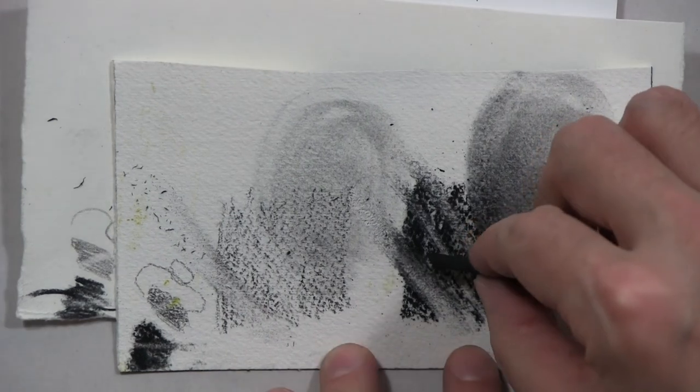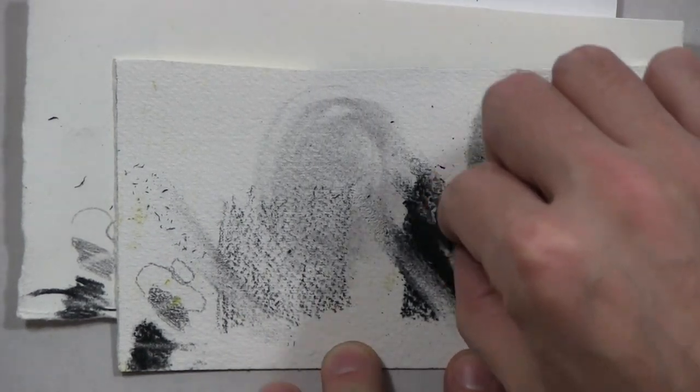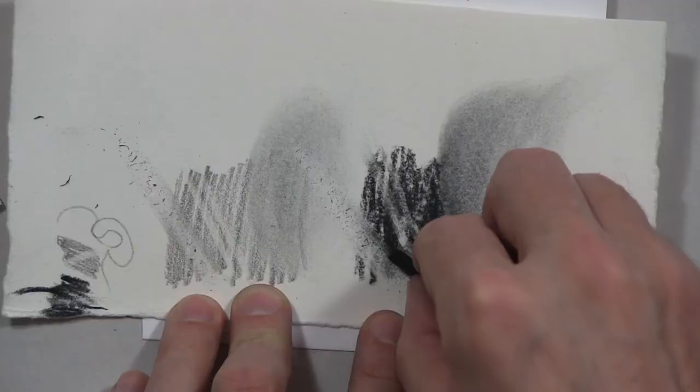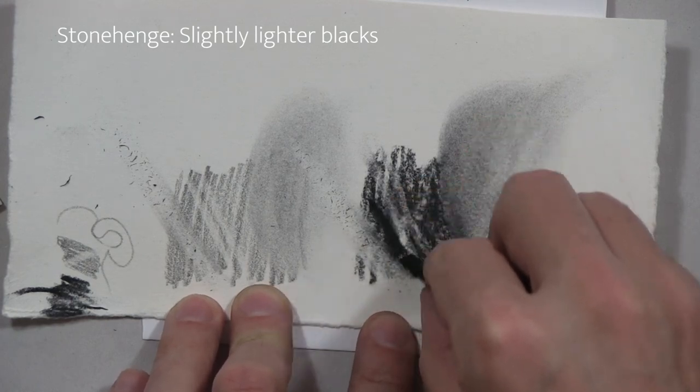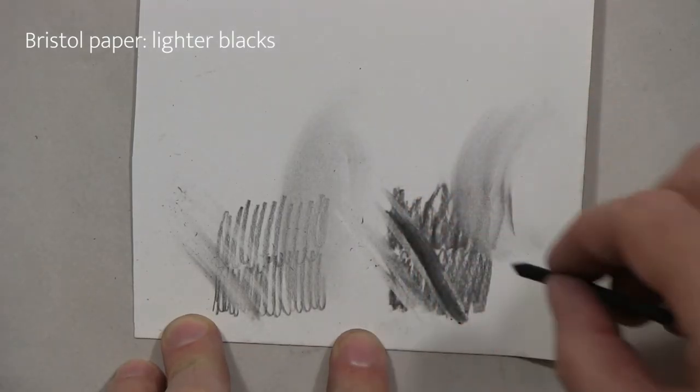It's hard to get a nice deep velvety black like that, especially with vine charcoal, but because of the paper we can.